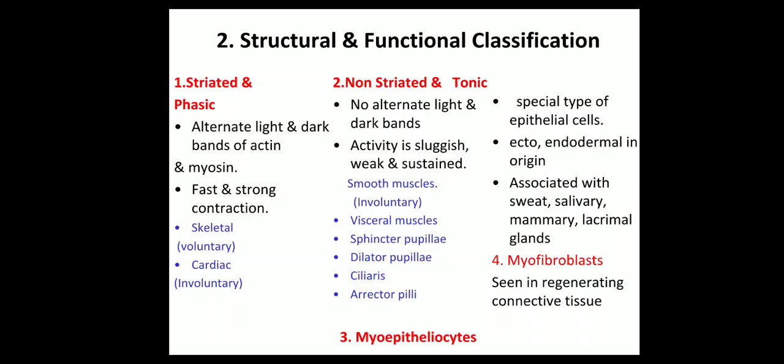Activity in non-striated muscles is sluggish, weak, and sustained — for example, smooth muscles which are involuntary visceral muscles, sphincter pupillae, dilator pupillae, ciliaris, and erector pili. Myoepitheliosites are a special type of epithelial cells, ectodermal and endodermal in origin, associated with sweat, salivary, mammary, and lacrimal glands. Myofibroblasts are seen in regenerating connective tissue and play an important role in the wound healing process.